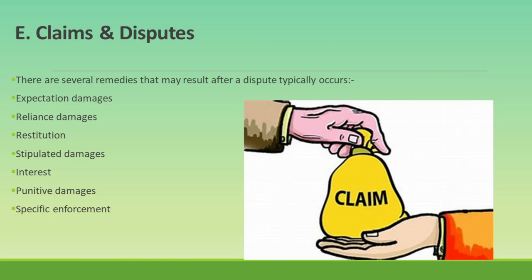Punitive damages are rare in contract law and are intended to punish the breaching party for particularly egregious conduct; they are more common in tort law than in contract disputes. Specific enforcement involves a court order requiring the breaching party to perform their obligations under the contract, typically used when monetary damages are inadequate, such as in cases involving unique or irreplaceable items. Understanding these remedies helps parties anticipate potential outcomes of disputes and negotiate settlements that reflect their interests and protect their rights.